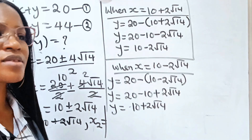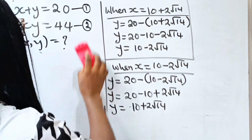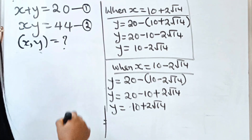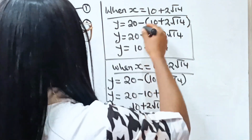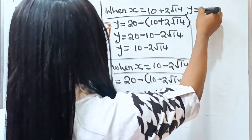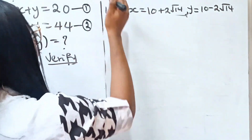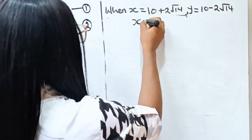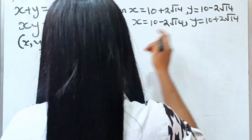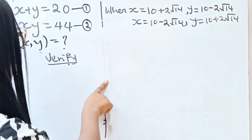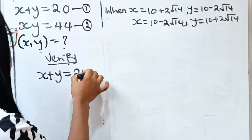Now let us prove that the answer we got is correct — which, like I said, is the most interesting aspect of this video. Let us verify using equation 1. When x is 10 plus 2 root 14 and y is 10 minus 2 root 14 — or vice versa, they are just the opposite of each other — according to equation 1, x plus y should equal 20.